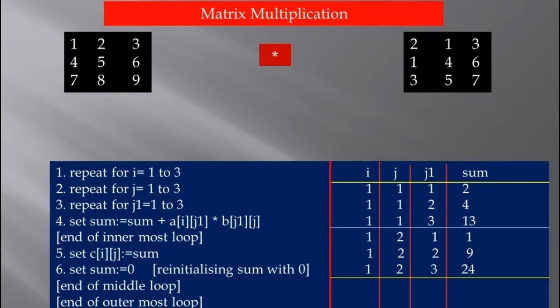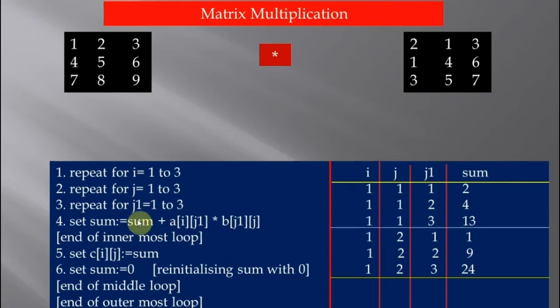This is my dry test. I have not written the complete dry test — I will show you part of it and the rest can be done by you as an exercise. The table has columns i, j, j1, and sum. Initially the outermost loop starts: value of i is 1, j is 1, j1 is 1, and it will enter into the innermost loop.